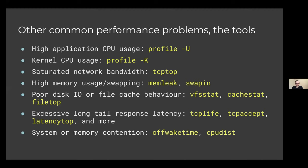Let's map those performance problems to specific tools. For CPU usage, we have the main profile tool with -u for userland and -k for kernel. For network bandwidth, we can look at TCP top. For high memory usage and swapping, there's memleak and swapin. For disk IO or file cache behavior, there's VFS stat for the virtual file system layer, cache stat for caching behavior, and file top. For long tail response latency, there's tcplife, tcpaccept, and latency top. For system or memory contention, we have off-wake time and CPU dist. This is just a preview of all the tracing and analysis tools available on Linux.